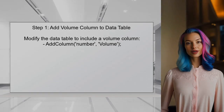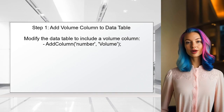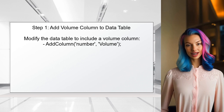To include the volume section in the annotation chart, the first step is to add an additional column to the data table for volume. This will allow the chart to display volume data alongside the other metrics.